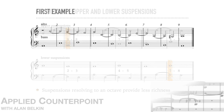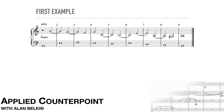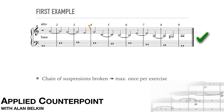Now let's look at an example of fourth species counterpoint. Notice how, in measures three and four, the chain of suspensions is broken. If we tied F over the bar line, its resolution would have been E in measure four. But that would mean the added part is just making delayed octaves with the cantus — F and E. The sound would be very bare, and the parallels are easily audible. So we break the chain here, and move to another consonance, and then resume the suspension line.